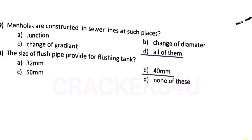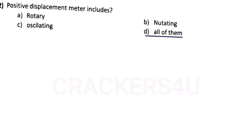Question number thirty-eight: the size of flush pipe provided for flushing tank — answer option B, 40 mm.